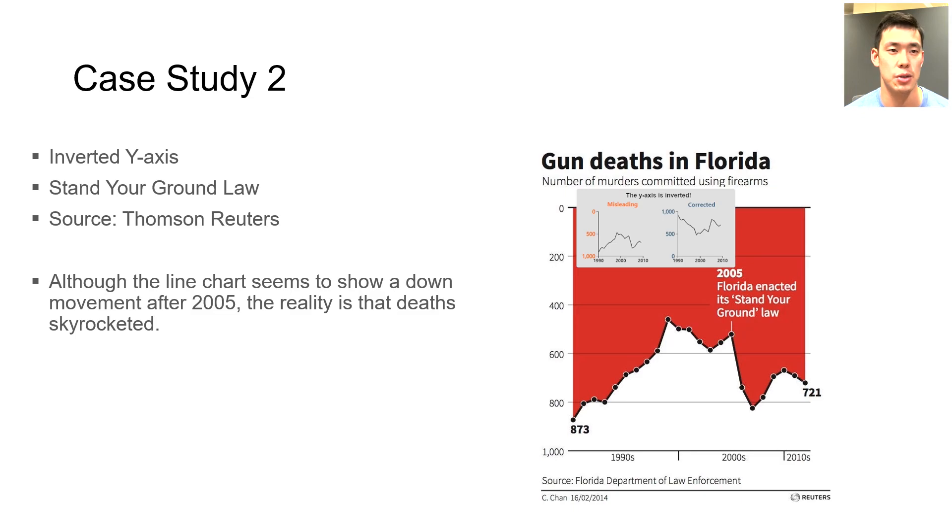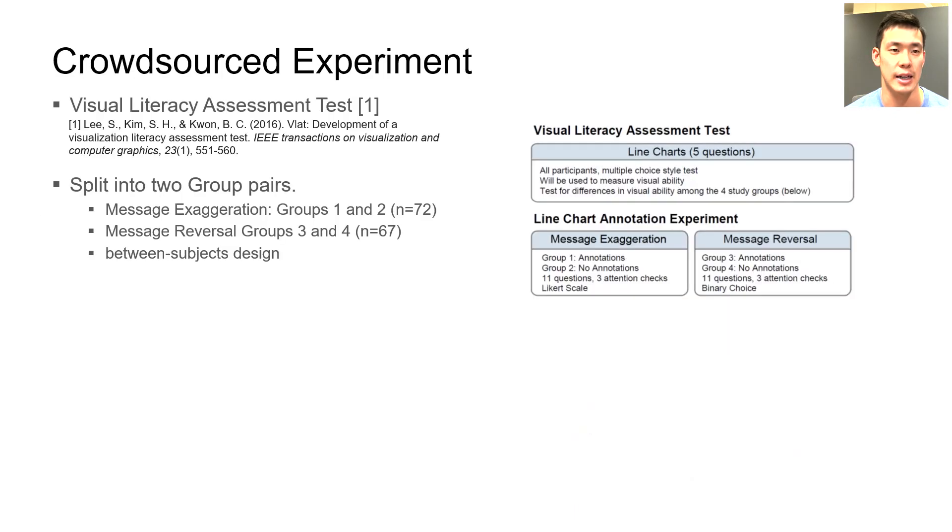We conducted a crowdsourced experiment on a total of 139 participants to gauge the effectiveness of our annotation tool. First, everyone took the line chart questions from the visual literacy assessment test, which is a validated method of assessing critical reading of charts.